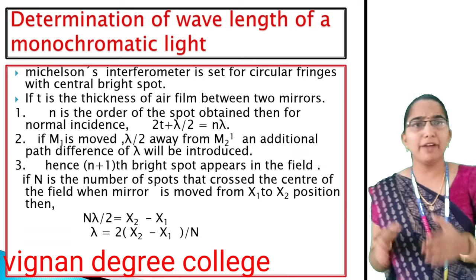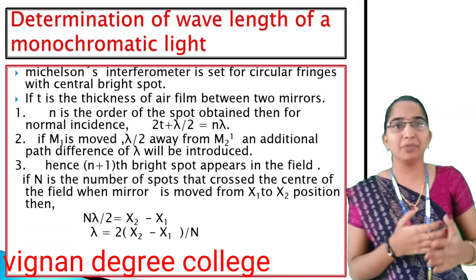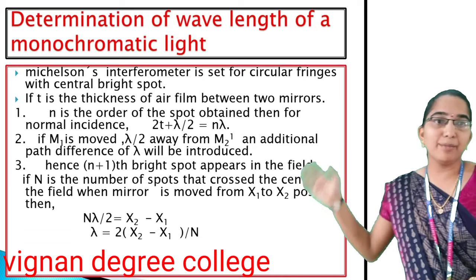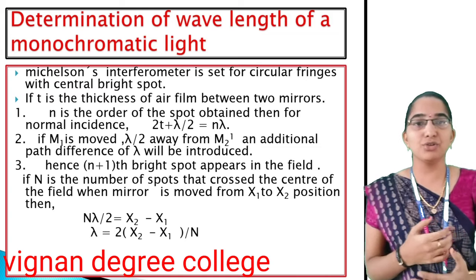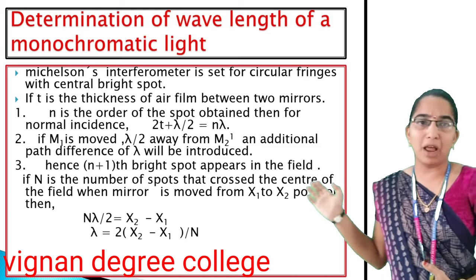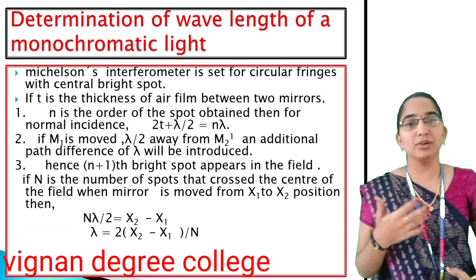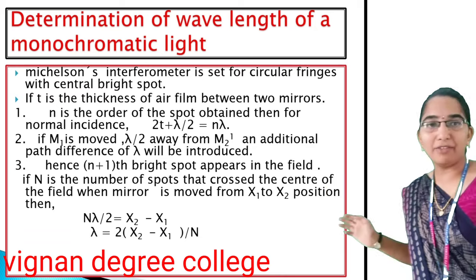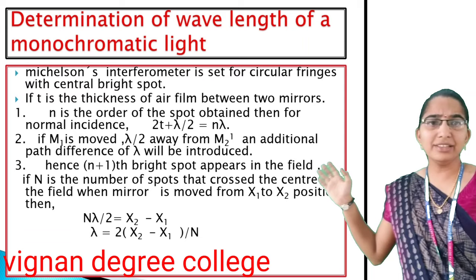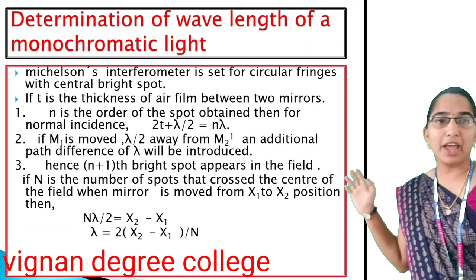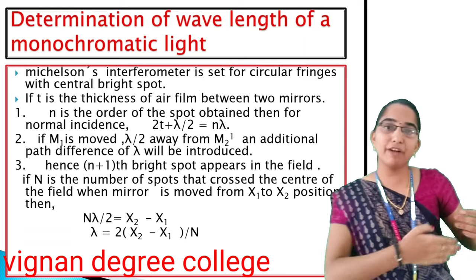If M1 is moved λ/2 away from M2 prime, an additional path difference of λ will be introduced. Hence, N+1 bright spots appear in the field.